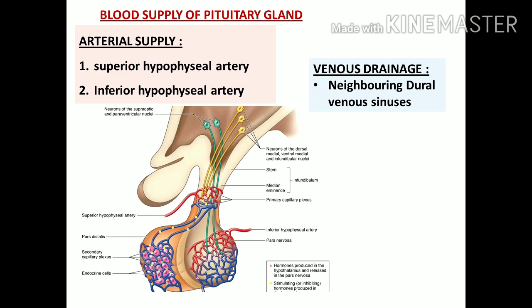Being an endocrine gland, the pituitary gland shows rich vascularity because its hormones have to be liberated directly into the bloodstream to circulate and reach target tissues. There are two arteries supplying oxygenated blood: the superior hypophysial artery and the inferior hypophysial artery. Both of these arteries come from the internal carotid artery. The inferior hypophysial artery supplies mainly the posterior part.